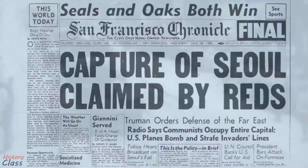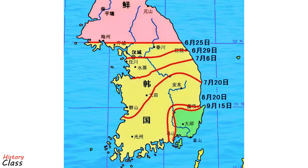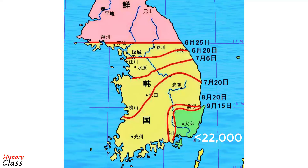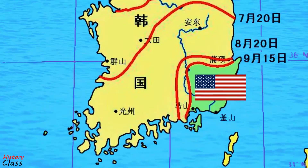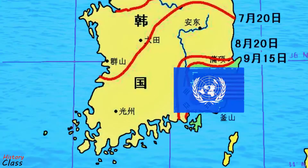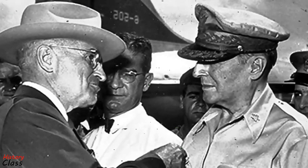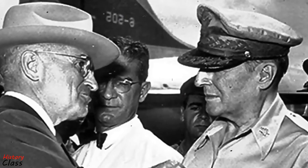In five days, the South Korean forces, which had 95,000 men on 25 June, were down to less than 22,000 men. In early July, when US forces arrived, what was left of the South Korean forces were placed under US operational command of the United Nations Command. President Truman ordered General MacArthur to transfer supplies and equipment to the Army of the Republic of Korea while giving air cover to the evacuation of US nationals.